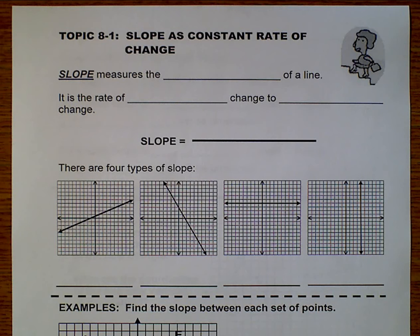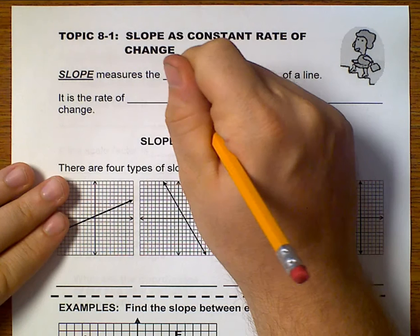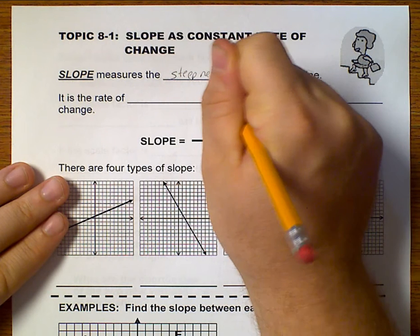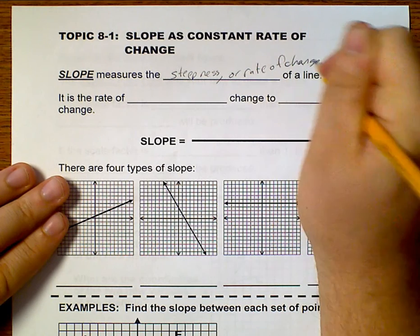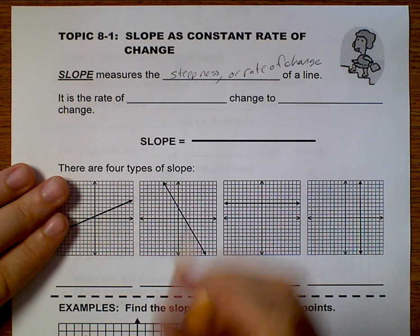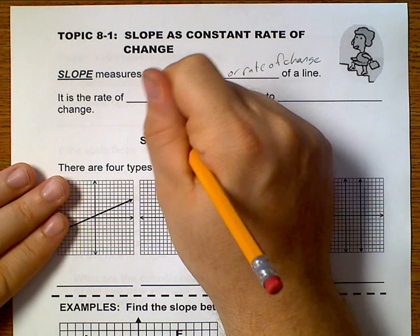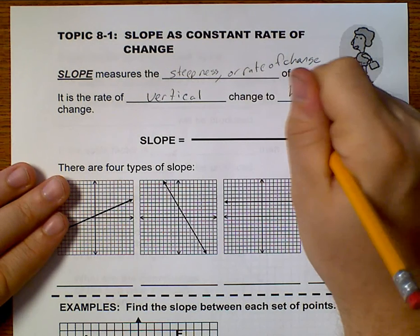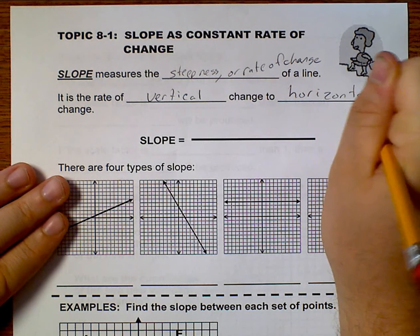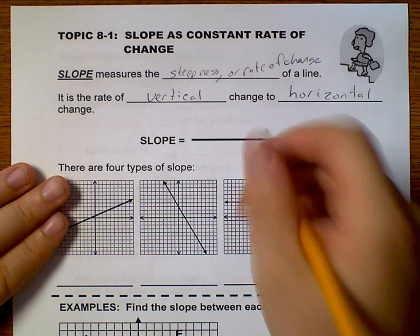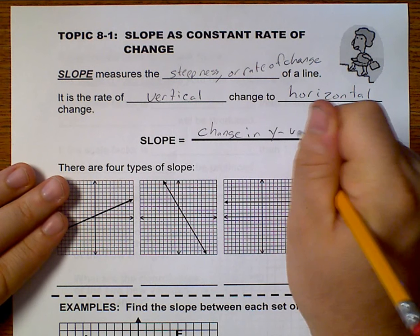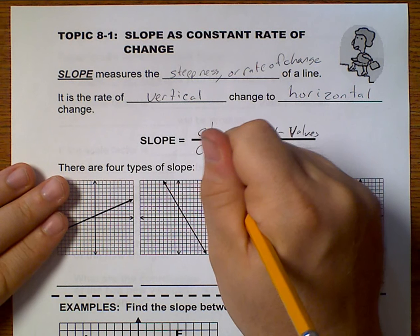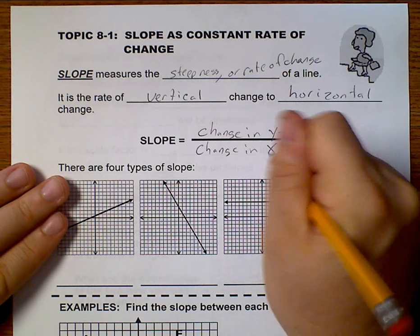Hello, this is topic 8-1, over slope as a constant rate of change. Slope measures the steepness, or rate of change, of a line. More specifically, it is the rate of vertical change to horizontal change. We have slope equals the change in y values over the change in x values.